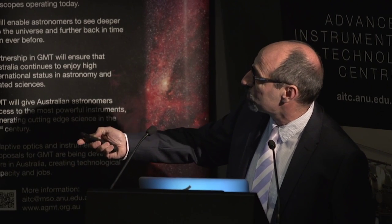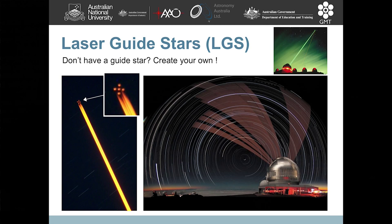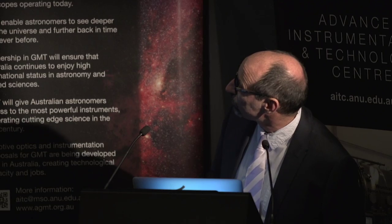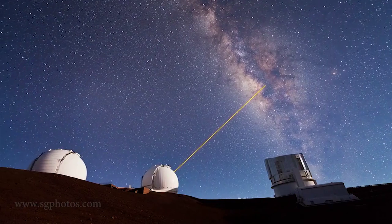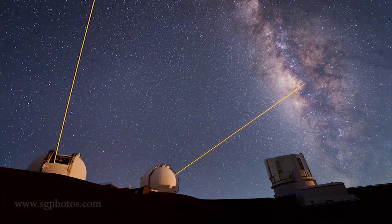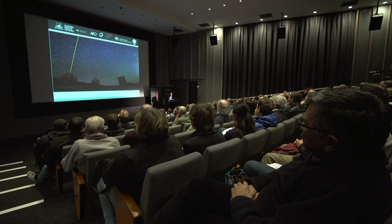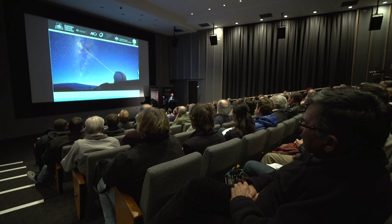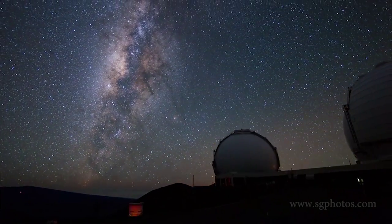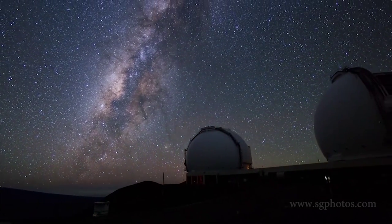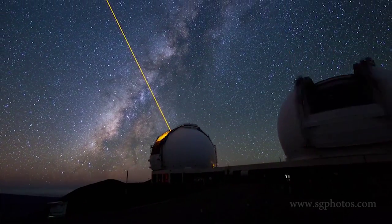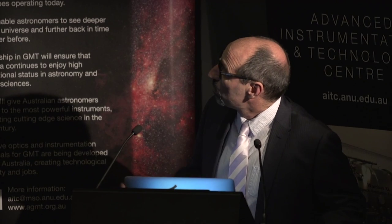Many observing sites now use laser guide stars. This long-exposure picture was taken at Gemini. A movie taken at Mauna Kea in Hawaii shows the Keck telescopes pointing toward the galactic center using laser guide stars. At the top of Mauna Kea, four telescopes now have lasers, and sometimes all four shine during the same night — quite impressive. The downside: other people can see where you're pointing.